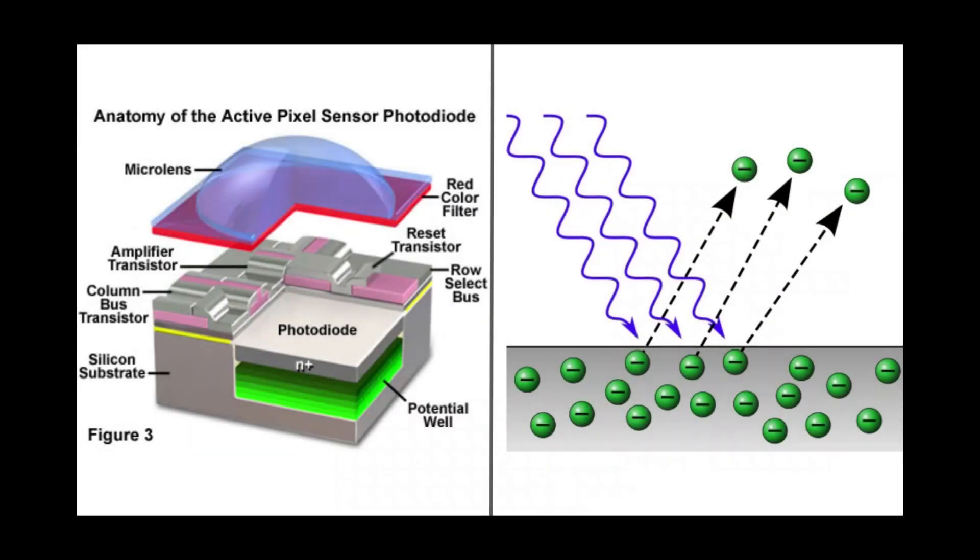The image on the left shows the structure of a pixel. When light strikes each individual pixel, it is again focused by the microlens. It then passes through a color filter and finally strikes a photodiode. For now, let's focus on the photodiode.